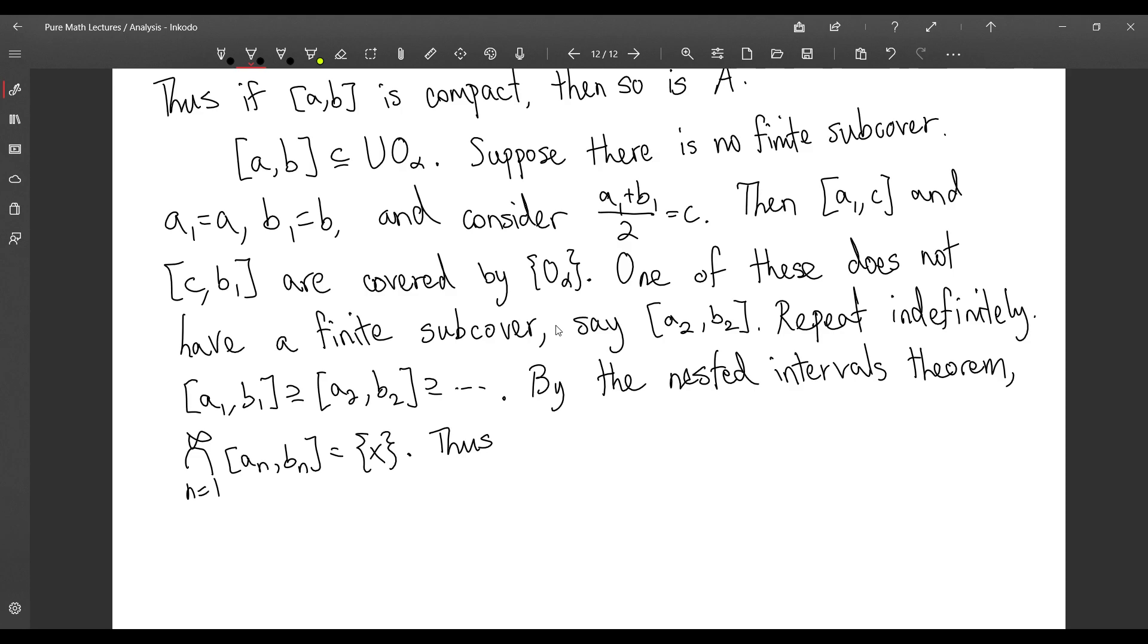Now, thus, X is going to be contained in every A1B1. Then, X is in some O sub-beta. O sub-beta is an open set. And remember, from the topology on R, it's open. So, there is R greater than 0, such that X minus R and X plus R is contained in O sub-beta.